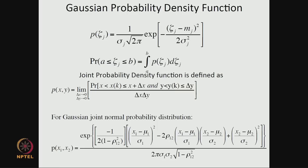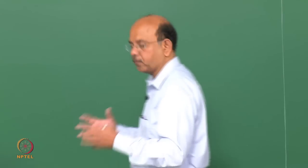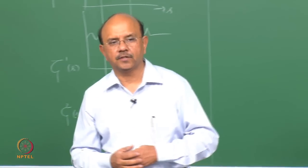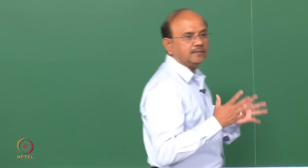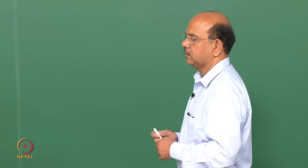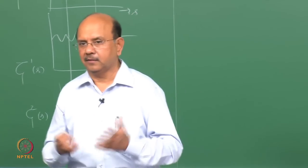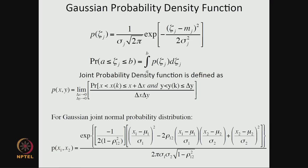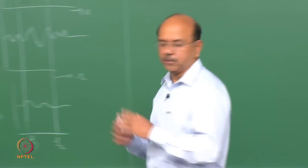The Gaussian or normal distribution function — note the difference between the probability density function and the distribution function. The probability distribution comes from integration of the probability density function, or the probability density function comes from differentiation of the probability distribution function. If I calculate the probability that zeta is between a and b, I integrate the density function between those limits.